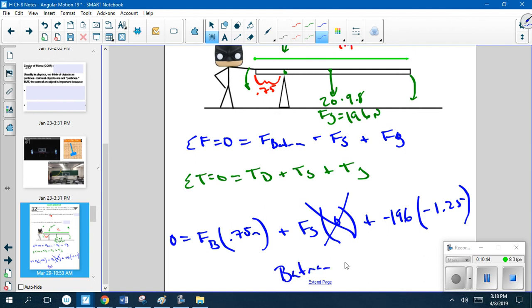All right, and then we're solving for the force of Batman. This will cancel out, and we're left with Batman given a force of 326.7 newtons. That should be negative because that's going down.